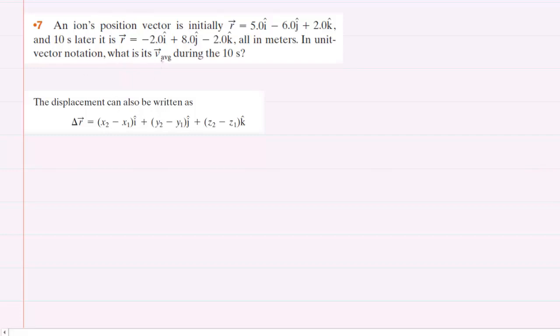Before we can calculate the ion's average velocity, it turns out that we will first need to calculate its displacement. And we can find the displacement of the ion by following this equation listed here.